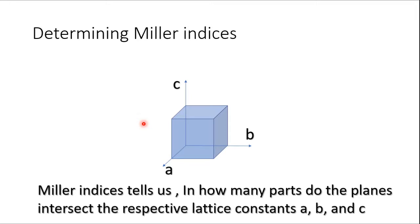Ab jo aapke paas Miller Indices hain, jo ki hum jisko hkl values bhi bolte hain, toh ye aapko kya information deti hai? Suppose humare paas ek plane hai aur uske Miller Indices aapke paas 2, 2, 1 hai. Toh ye 2, 2, 1 ye hkl value hai — means h is 2, k is 2, l is 1. Toh ye particular jo plane banaya hai, iske Miller Indices aapke paas 2, 2, 1 hain.